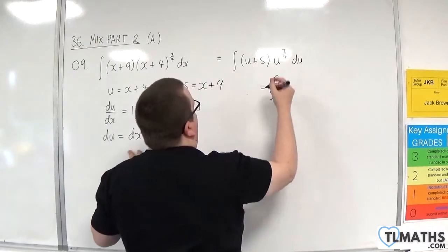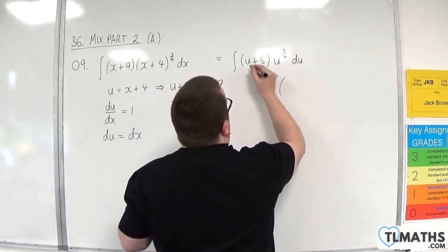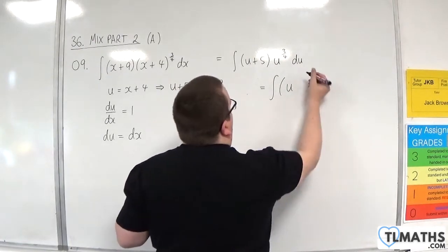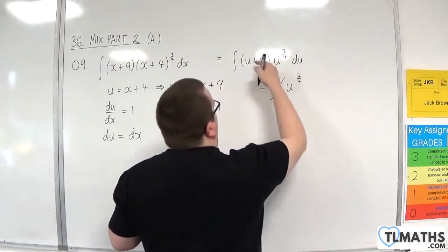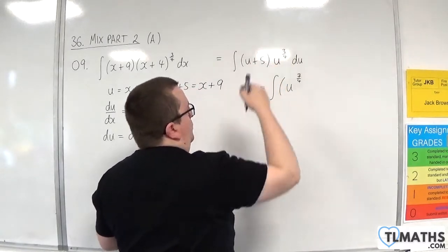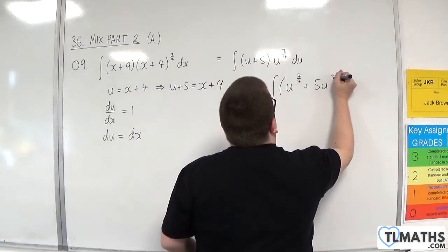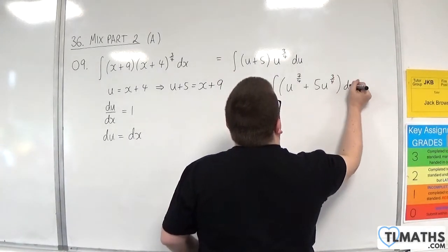Now, I need to expand that out, so we have u times u to the 3 quarters. So that would be u to the 7 quarters, because we've got 4 quarters plus 3 quarters, which is the 7 quarters, plus 5u to the 3 quarters, du.